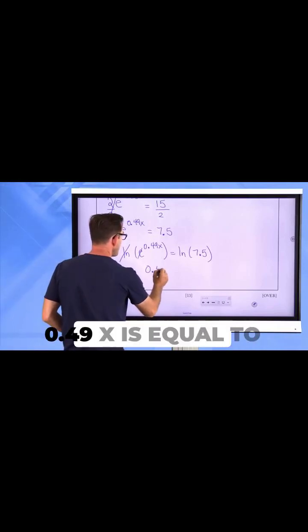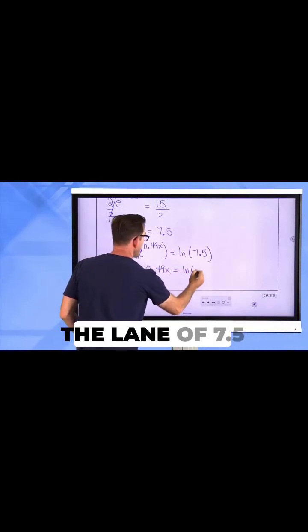So we would get 0.49x is equal to the ln of 7.5.